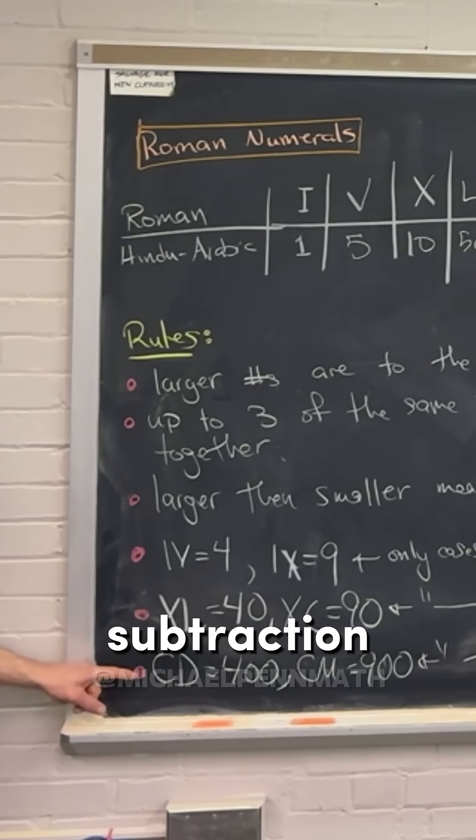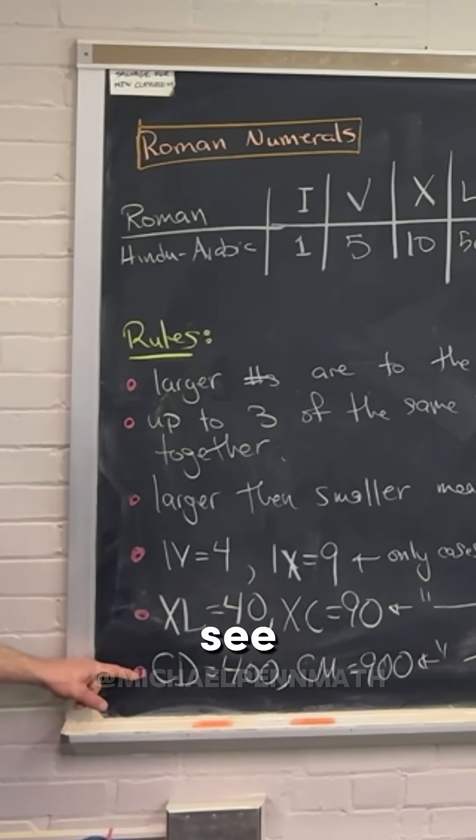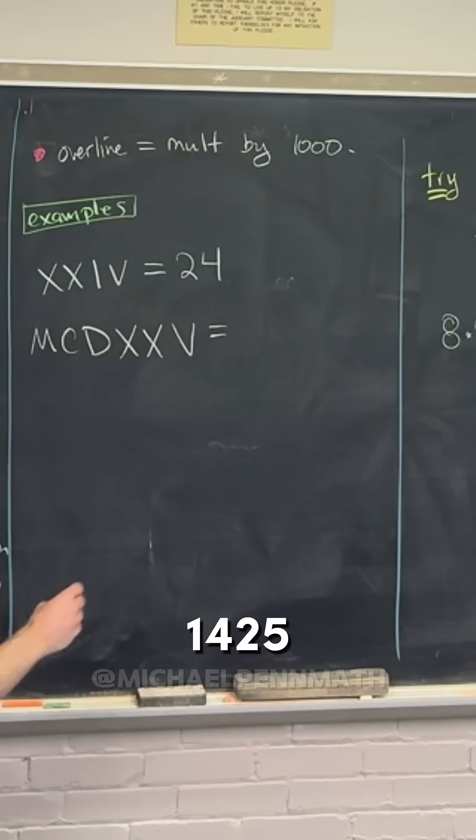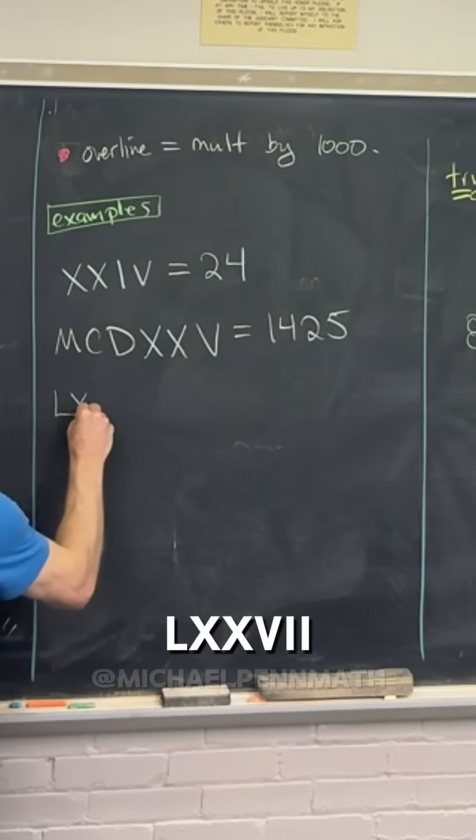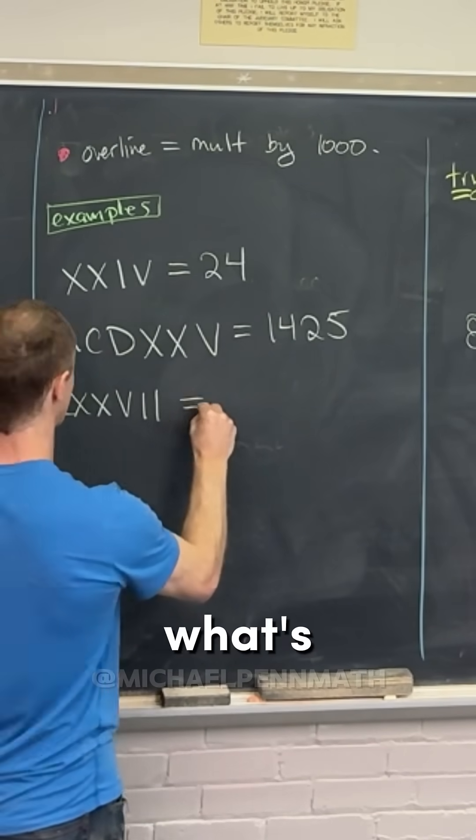So let's see, in the end we have 1425. LXXVII, so what's that?